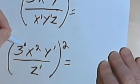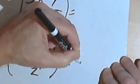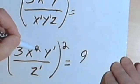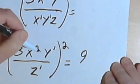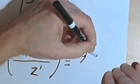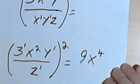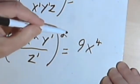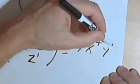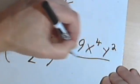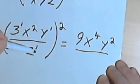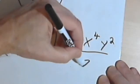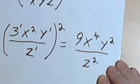So 3 to the first raised to the second power is 3 to the 1 times 2, or 3 to the second, or just 9. x squared to the second power, I'll multiply the 2 times the 2, and I'll get an x to the fourth. And then y to the first raised to the second power is going to be y squared, and that will all be over z to the first raised to the second power, which is z squared.